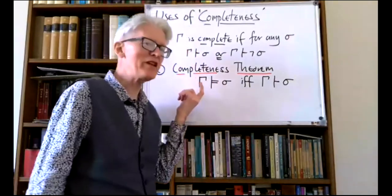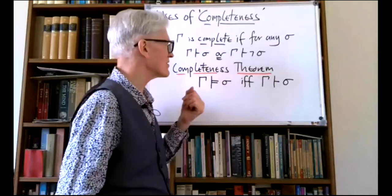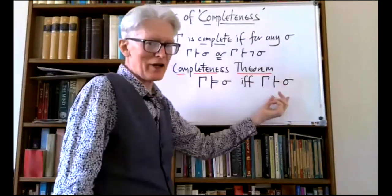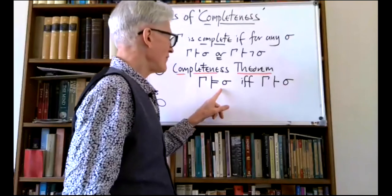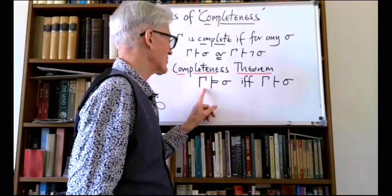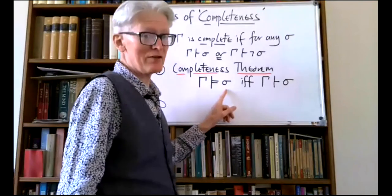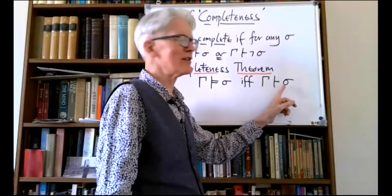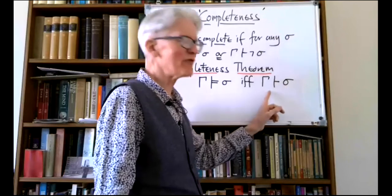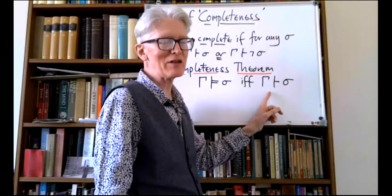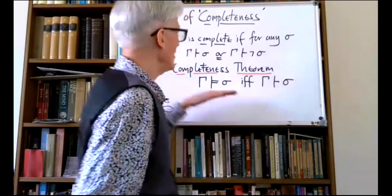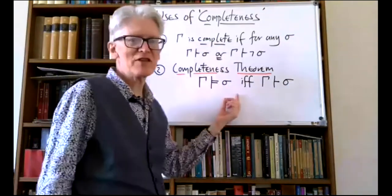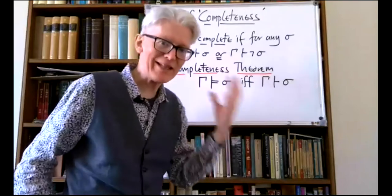Then there's the Gödel completeness theorem, which he did in his PhD thesis. The principal direction was: if in every structure in which a set of axioms gamma was true you'd always have sigma being true, then actually you could prove it — you could prove in predicate calculus PC that sigma was derivable using the rules of proof from gamma. So we have the completeness of a theory as an adjective describing a theory.